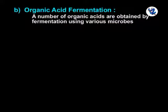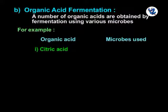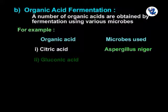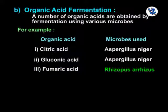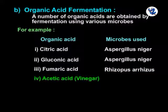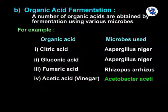Organic acid fermentation: a number of organic acids are obtained by fermentation using various microbes. For example, citric acid and gluconic acid are obtained from Aspergillus niger; fumaric acid is obtained from Rhizopus arrhizus; and acetic acid (vinegar) is obtained from Acetobacter aceti.